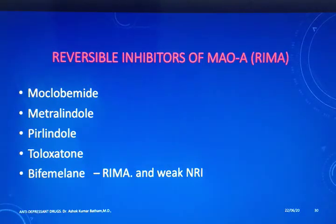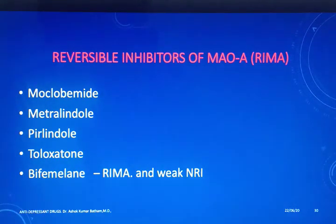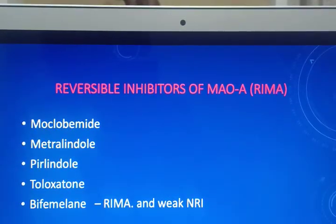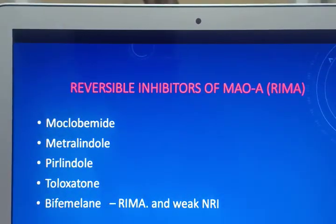We also have a group called RIMAs — reversible inhibitors of monoamine oxidase — abbreviated R-I-M-A. These drugs are moclobemide, brofaromine, toloxatone, and befloxatone, the last of which is also a weak norepinephrine reuptake inhibitor.